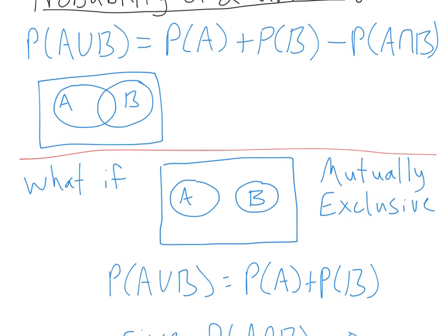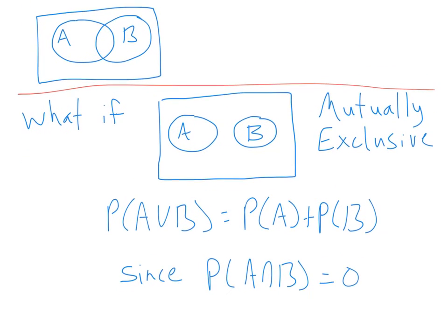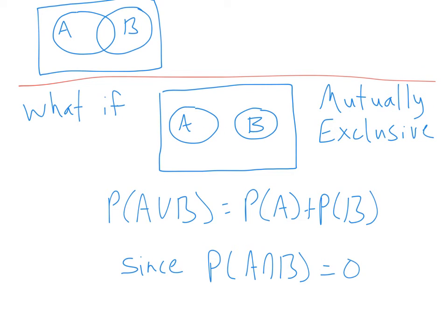There's a special case worth mentioning: if A and B don't have anything in common — no intersection — then P(A ∪ B) = P(A) + P(B), because you haven't added anything twice. We call these sets mutually exclusive, a fancy way of saying they don't have anything in common. If events A and B are mutually exclusive, meaning they can never happen at the same time, then P(A ∪ B) is just P(A) + P(B), because the intersection in this case equals zero.